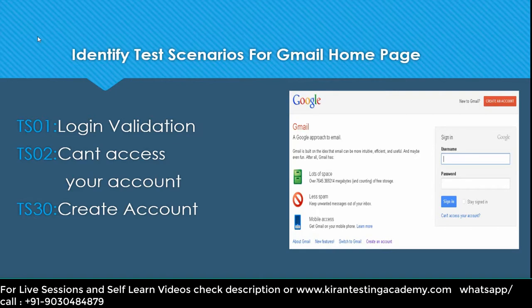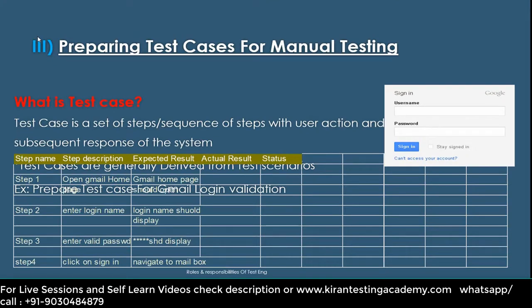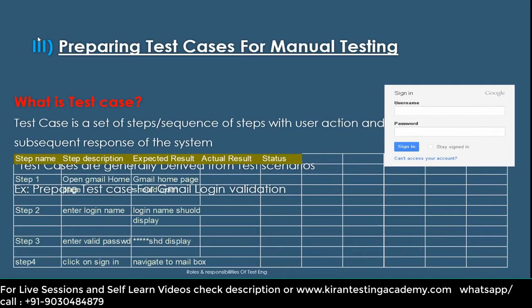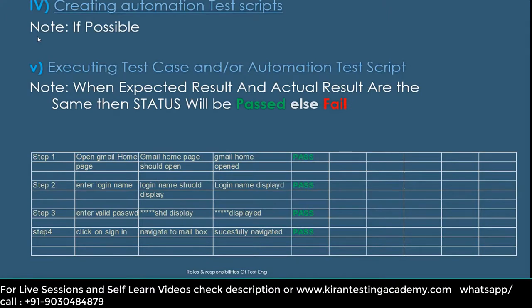So the flow is: first, understand the functionalities; next, derive the test scenarios; then, for each test scenario, write the test cases. How to write test cases will be discussed in depth in this course — for now, just understand the flow. After writing the test cases, execute them and you will get a result: either the test case is passed or failed. If it is passed, no problem.